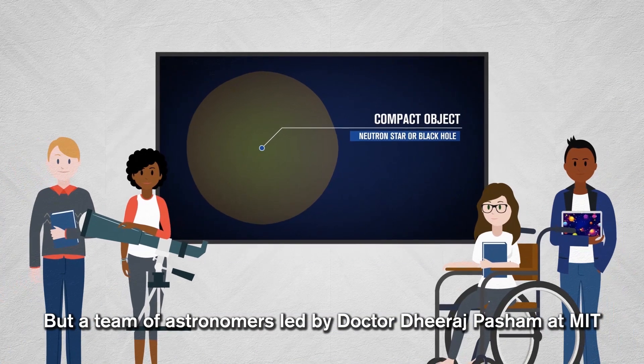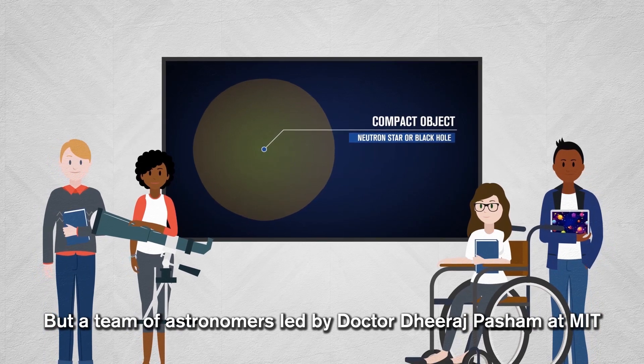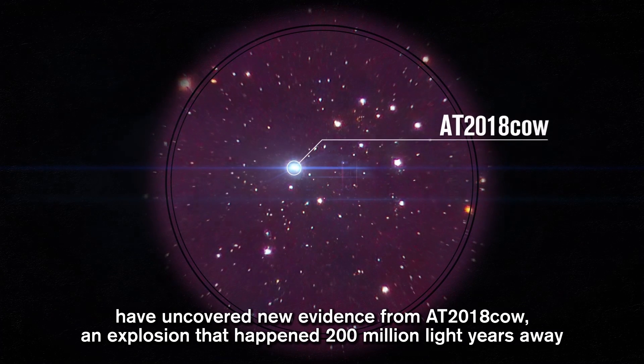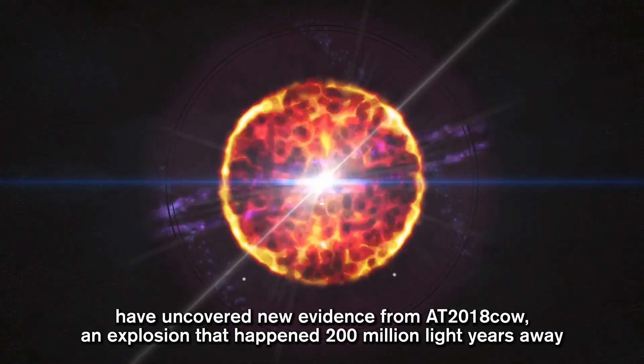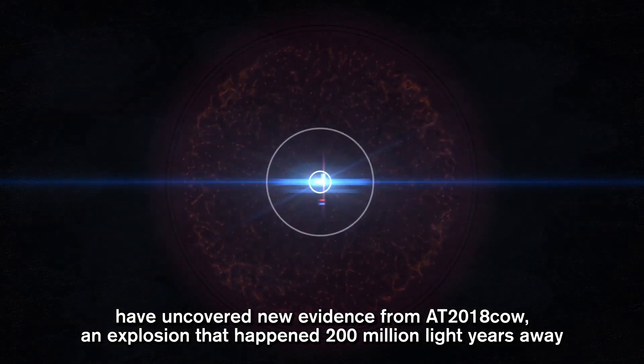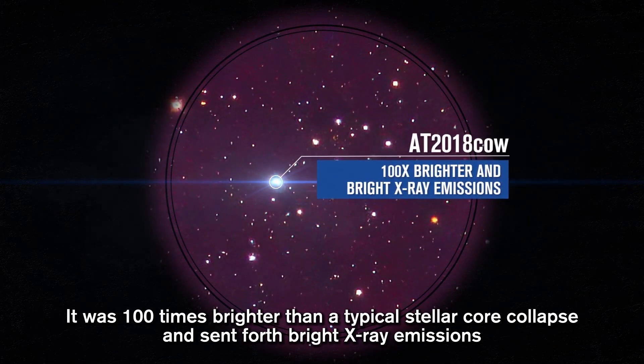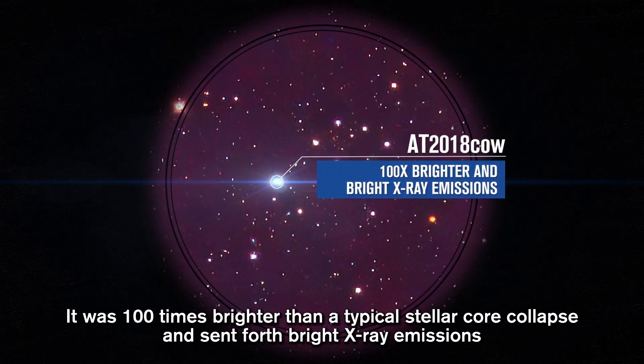A team of astronomers, led by Dr. Deeraj Pashem at MIT, have uncovered new evidence from AT-2018 Cal, an explosion that happened 200 million light-years away. It was 100 times brighter than a typical stellar core collapse and sent forth bright X-ray emissions.